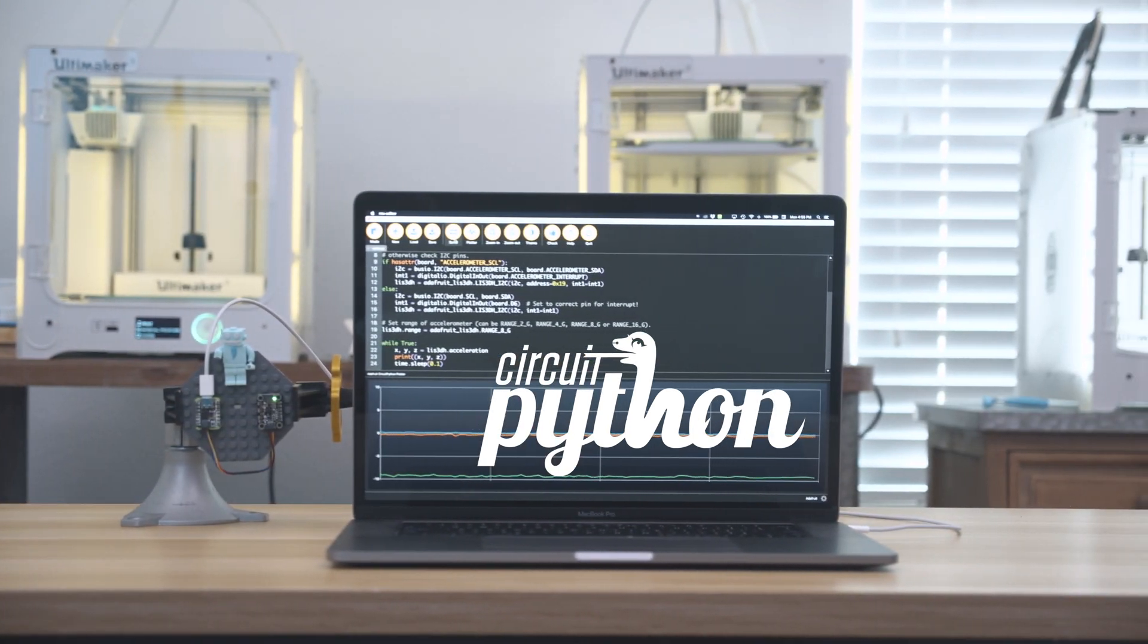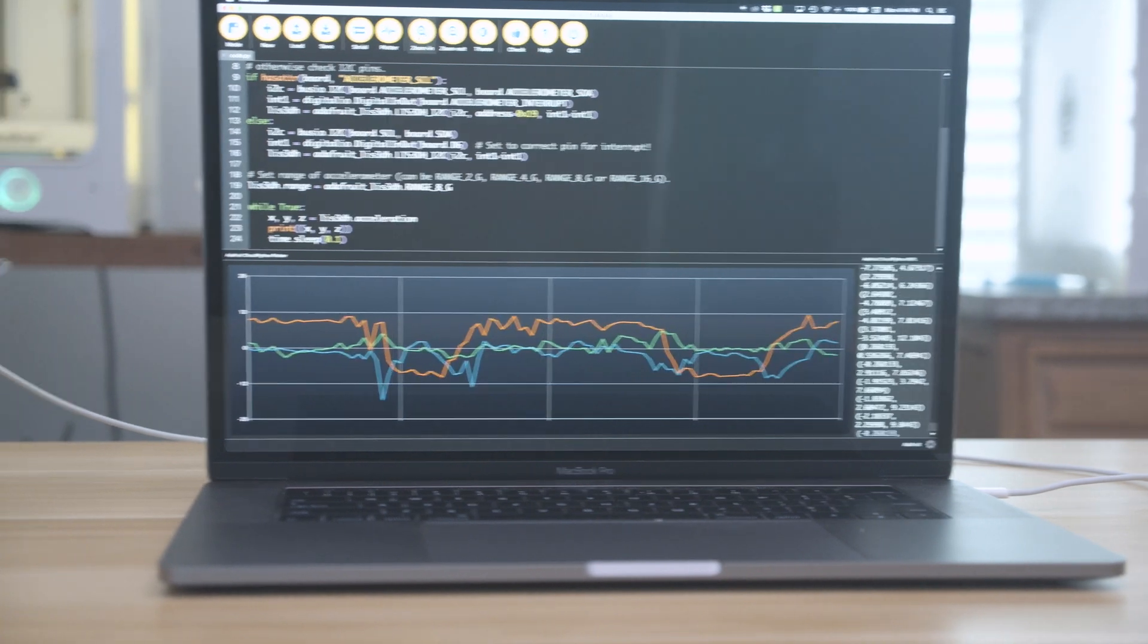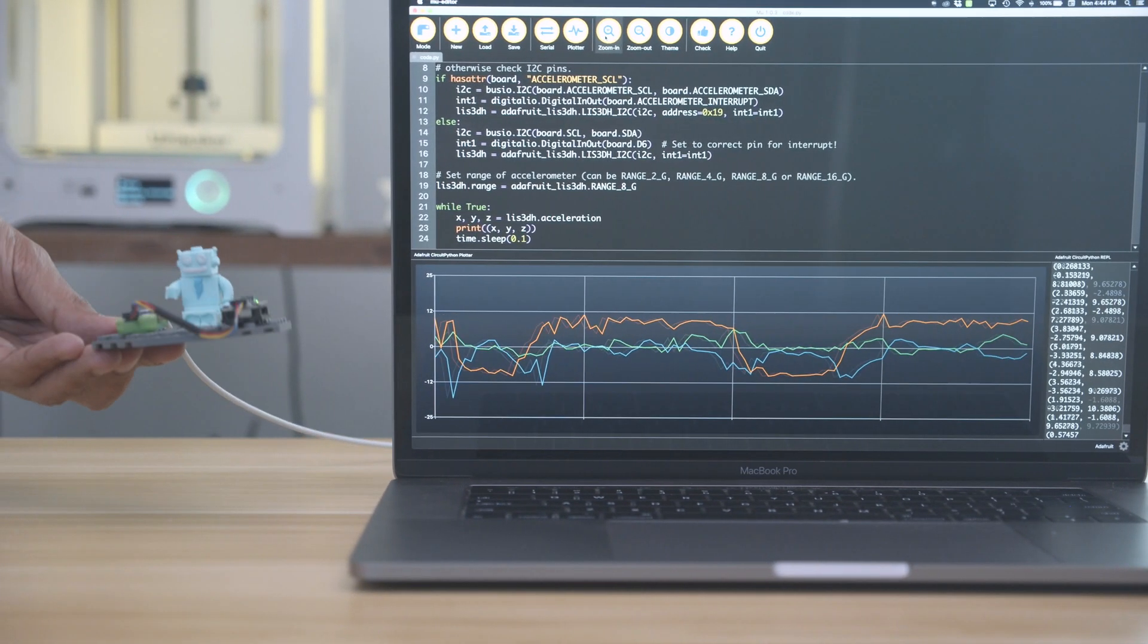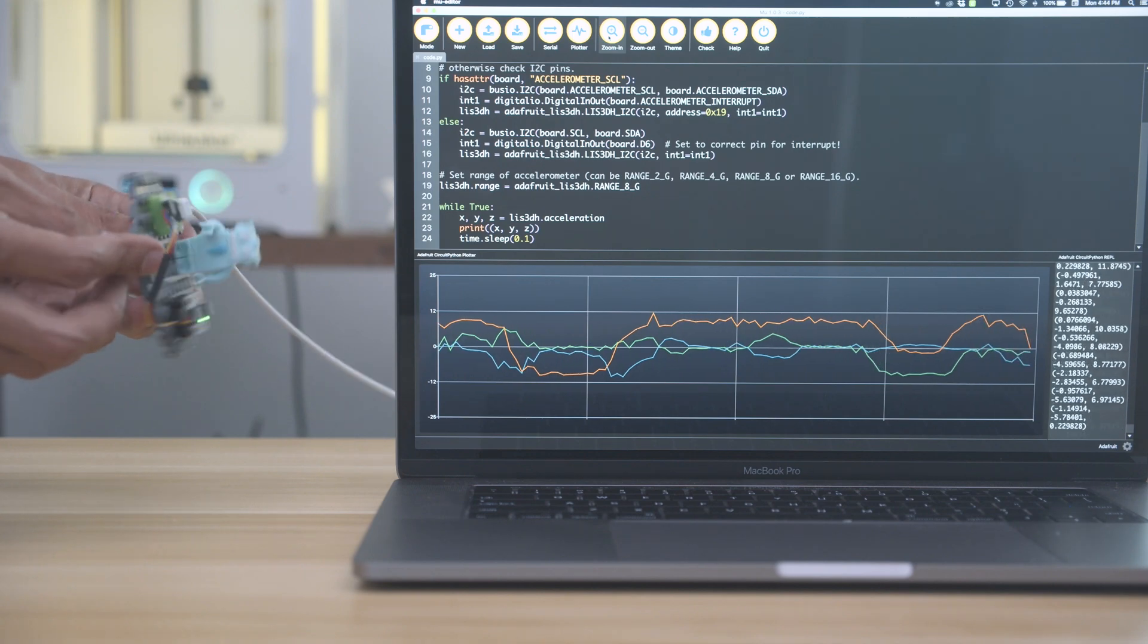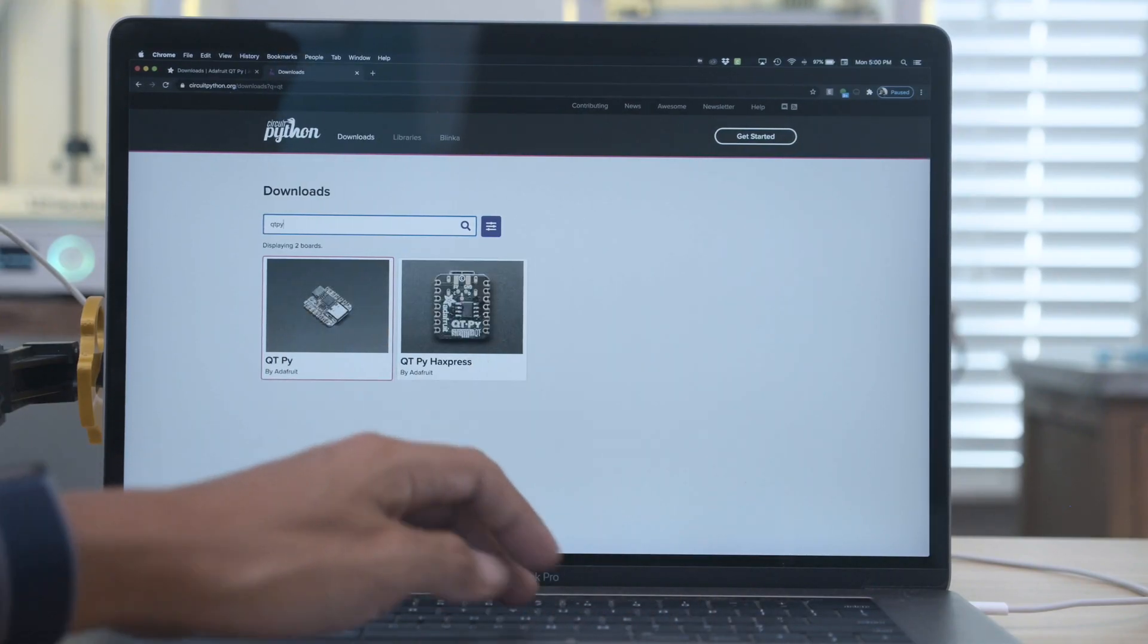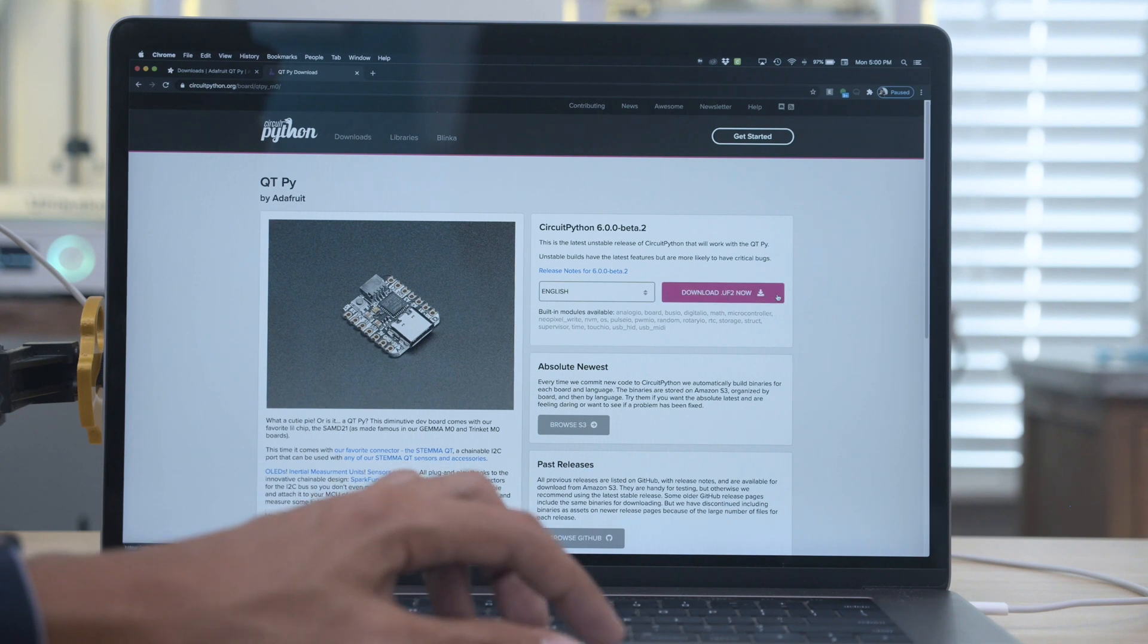It's got CircuitPython support so it'll work with all of Adafruit's libraries and example code. With the Moo Python editor you can use the built-in tools for plotting data and outputting to the serial monitor. To install CircuitPython head over to CircuitPython.org and search for CutiePie. Be sure to select your preferred language and download the latest.